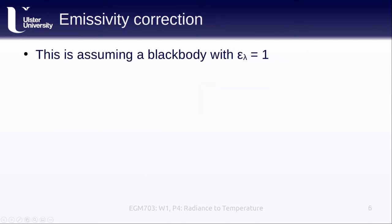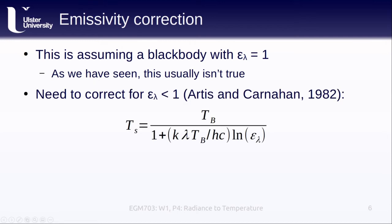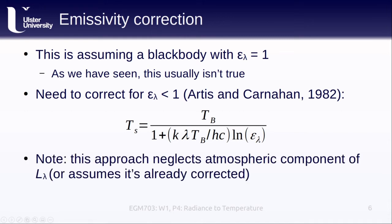This is all assuming that we're observing blackbodies. Unfortunately, the world is not so simple, and we have to somehow correct the brightness temperature to account for this fact in order to estimate the surface temperature. We calculate the surface temperature as a function of the brightness temperature and the emissivity of the surface. Of course, this approach also neglects the atmospheric component of the spectral radiance or assumes that it's already been corrected. In the next lesson we'll look at some ways that we can actually do this.